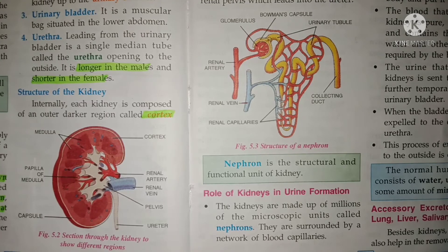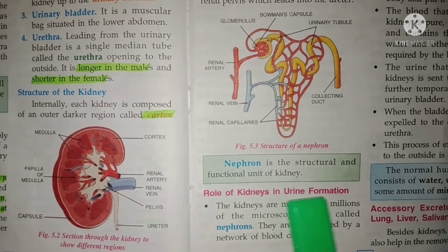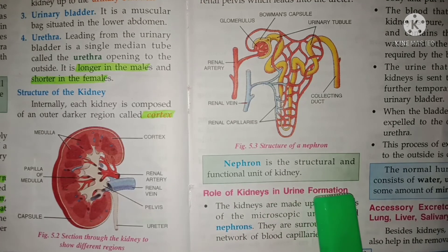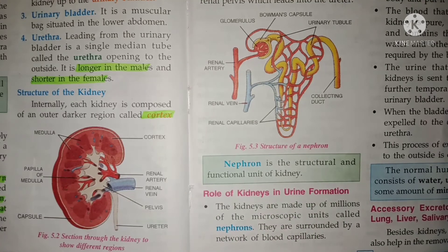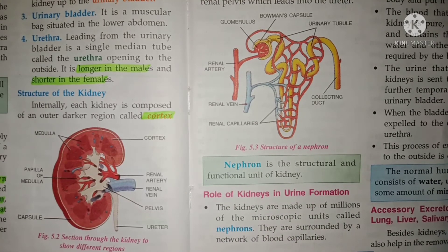So the nephron is the structural and functional unit of the kidney. This is what we have learned in this video. In the next part of the video, we will cover the role of the kidney during urine filtration. Stay tuned.